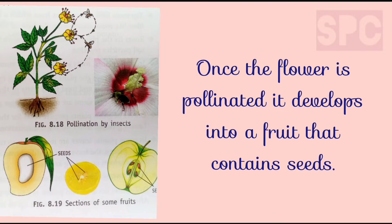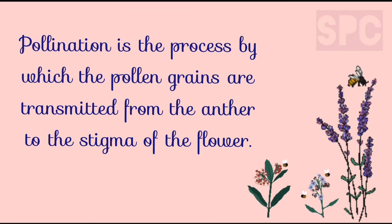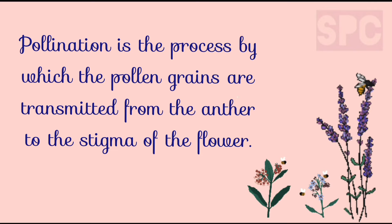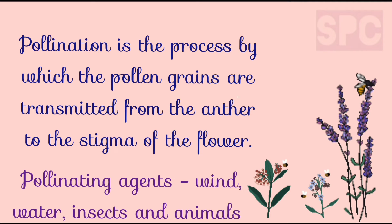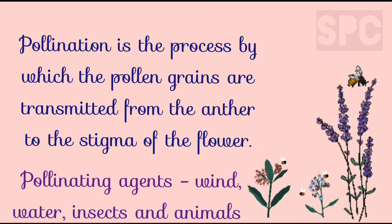Once the flower is pollinated, it develops into a fruit that contains seeds. Pollination is the process by which the pollen grains, which are yellowish powdery substances present on the anther, are transferred to the stigma of the flower. This happens with the help of wind, water, insects, and animals, and so they are called pollinating agents.